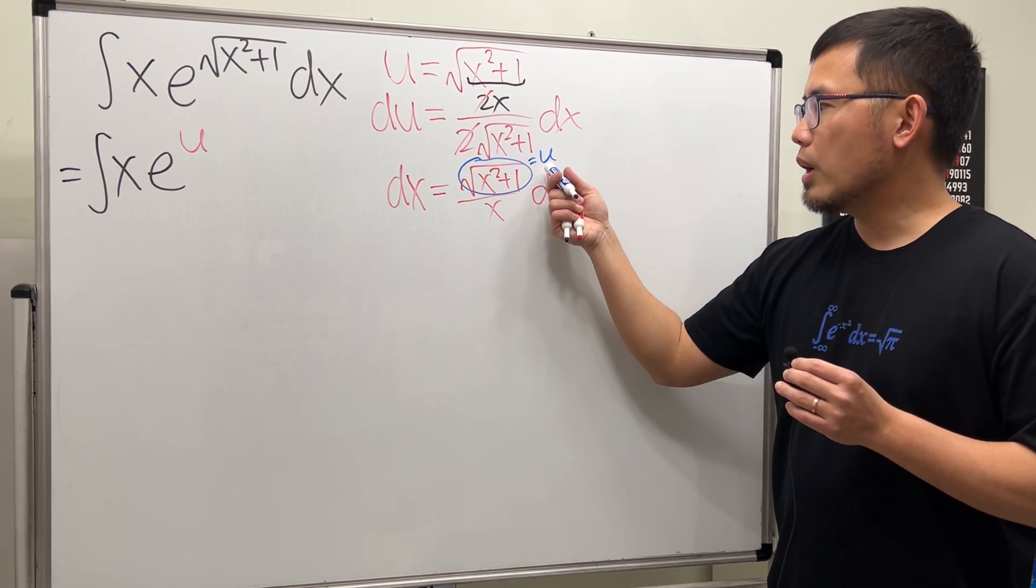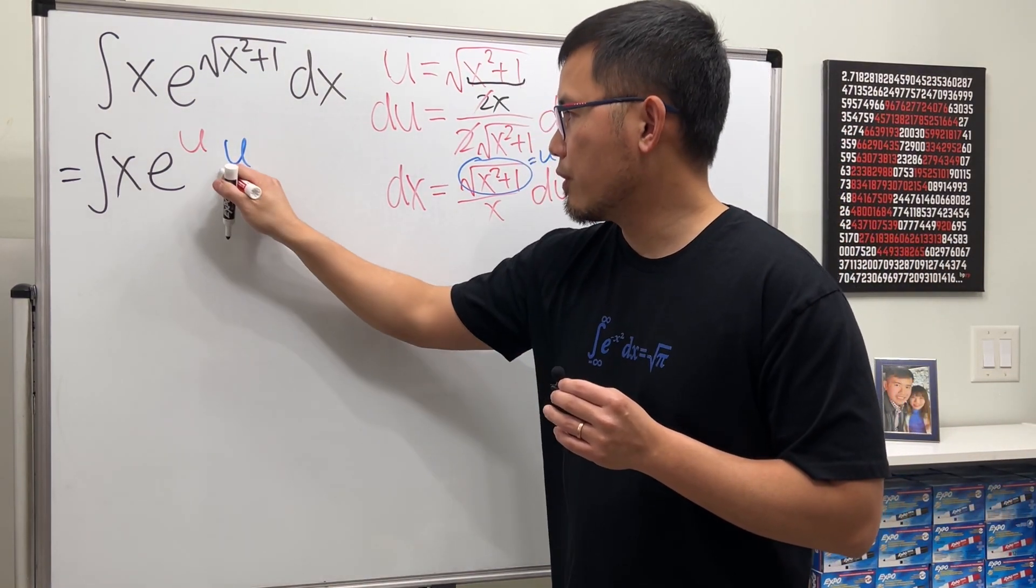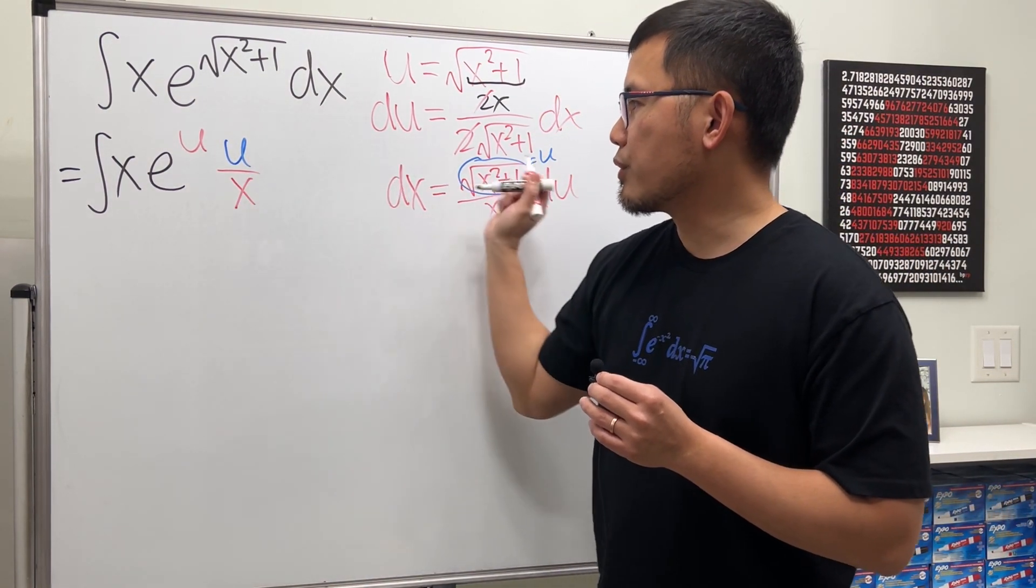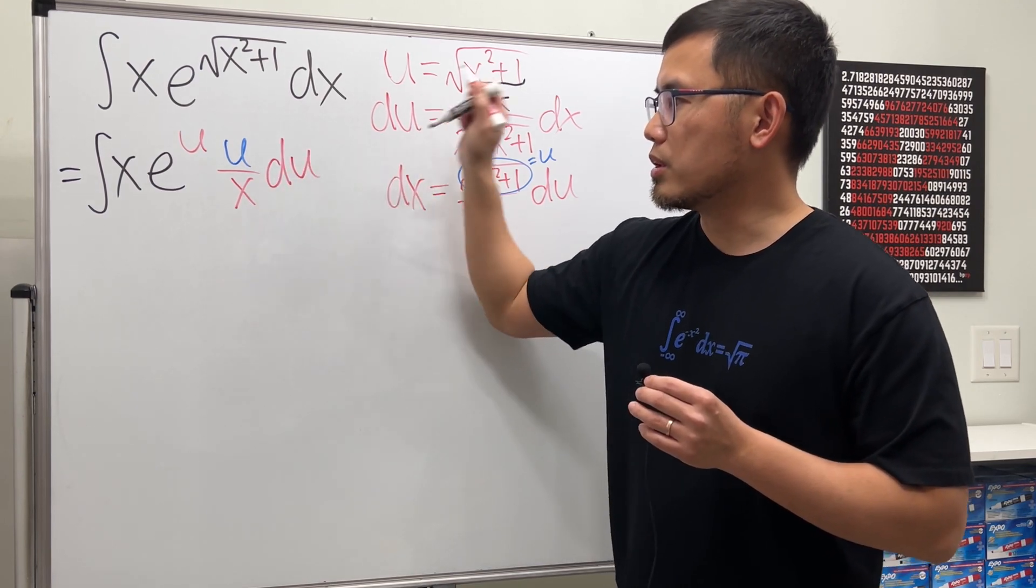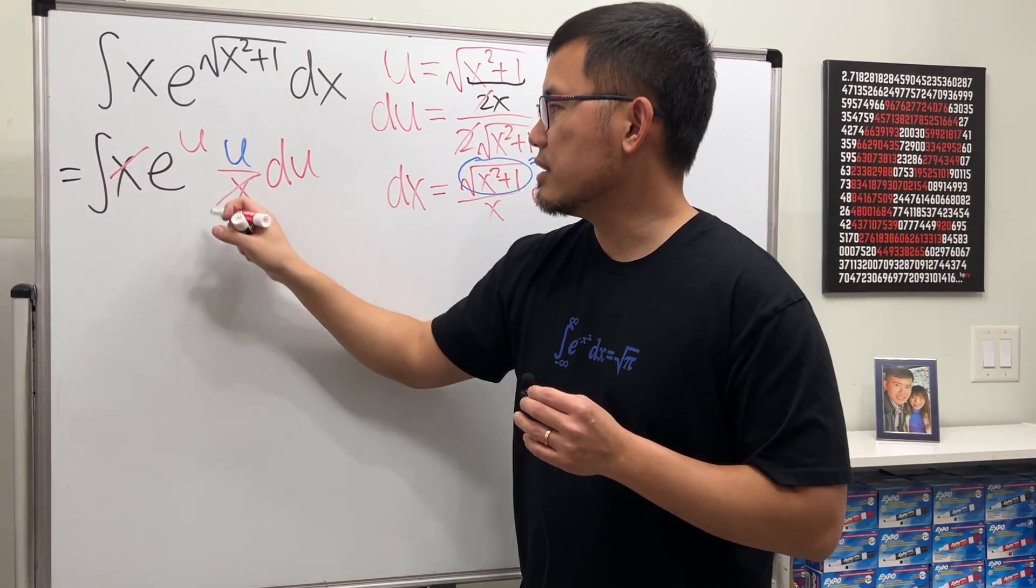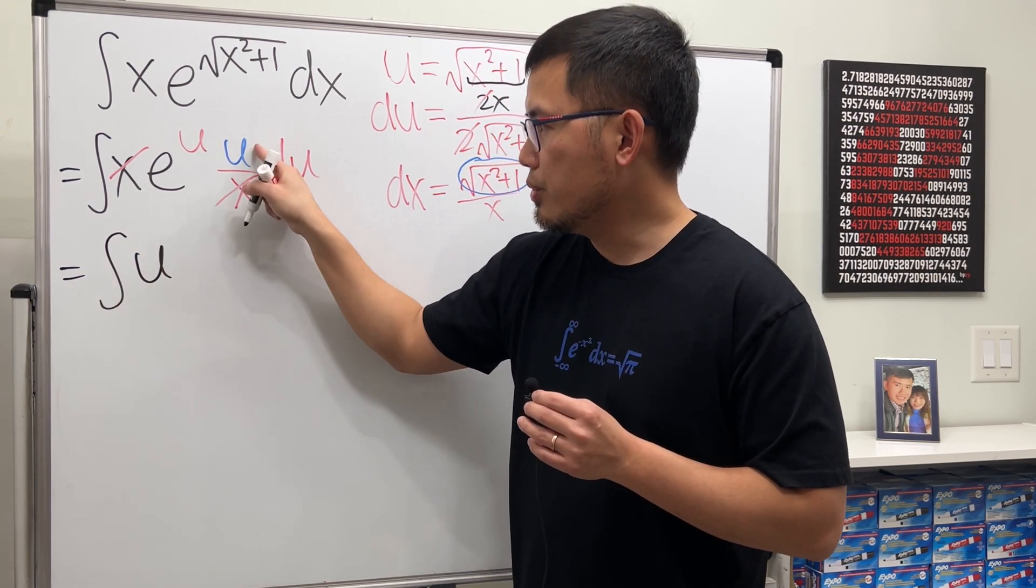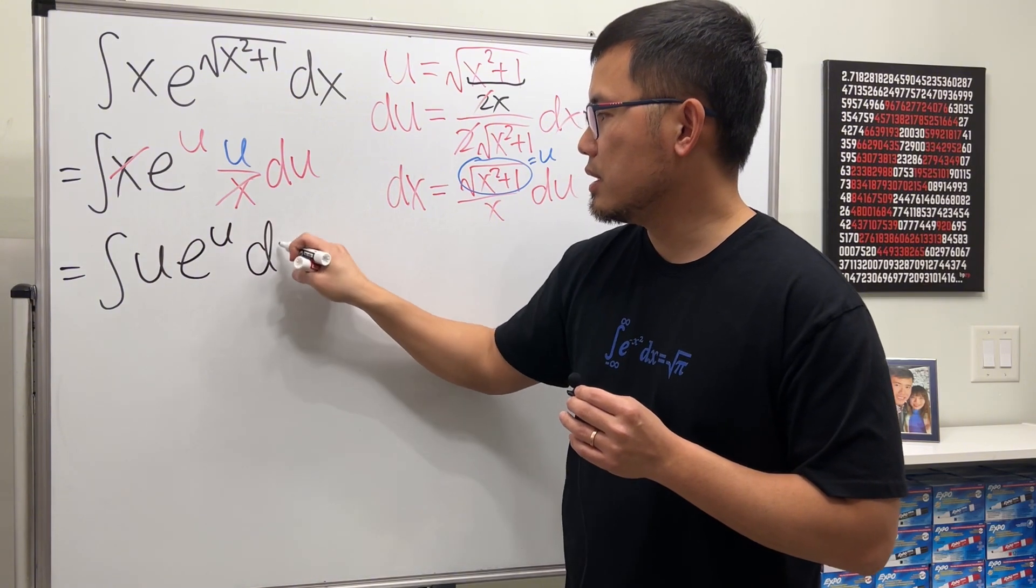Yes, so I'm going to put down u over x right here, u over x, and then of course we are in the u world. This is so nice because the x and x cancel, so we're just looking at the integral of u times e to the u du.